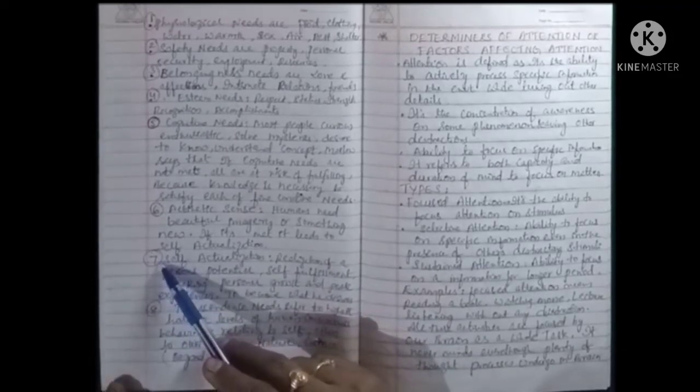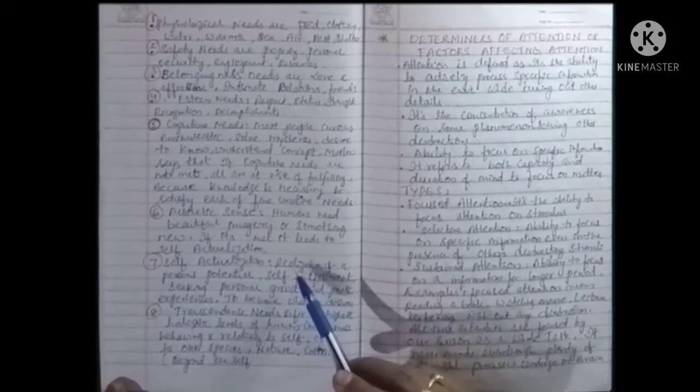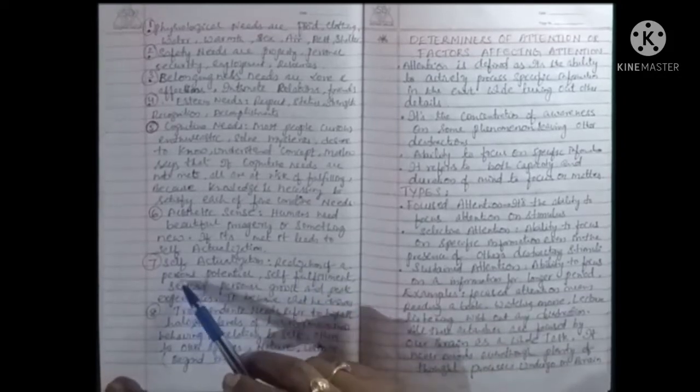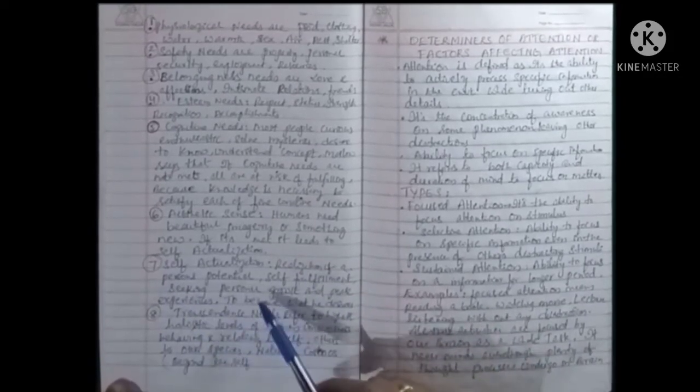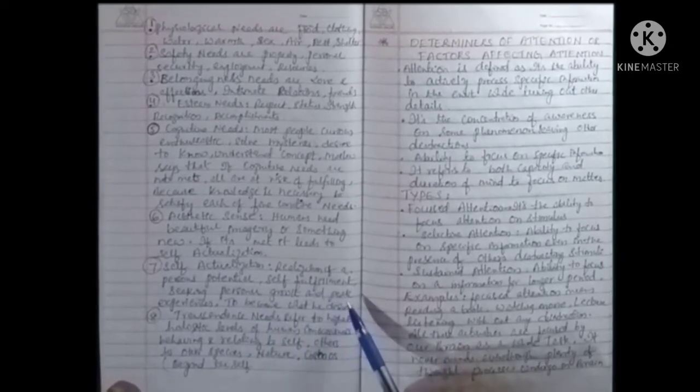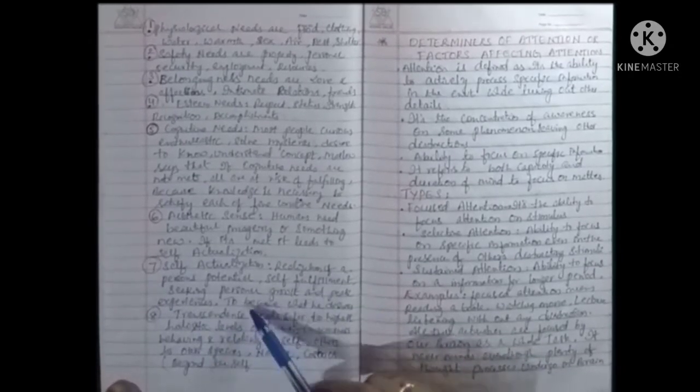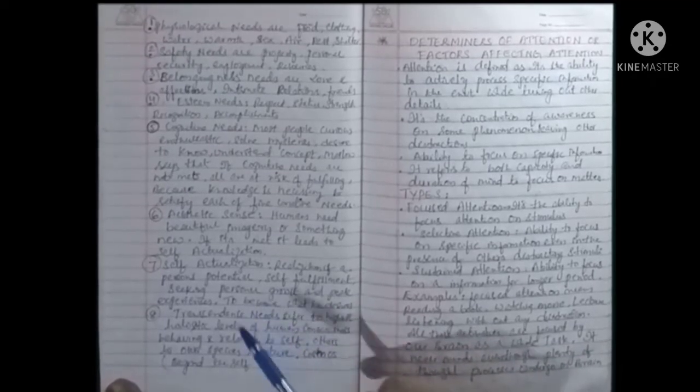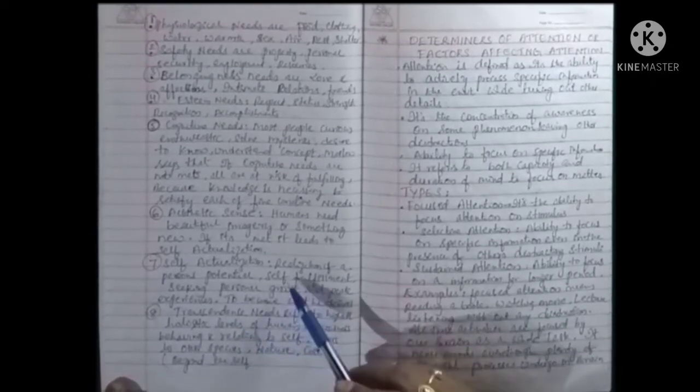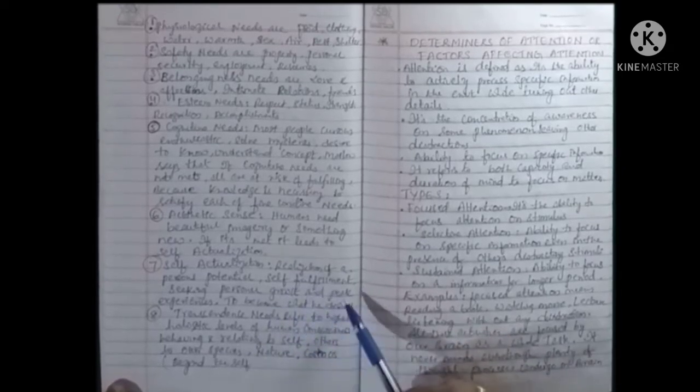The seventh one is self-actualization. Realization of a person's potential, self-fulfillment, seeking personal growth and peak experiences to become what he desires. Here the person uses his maximum potential to get success in their own life.